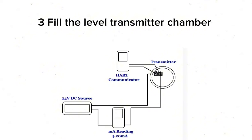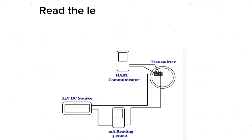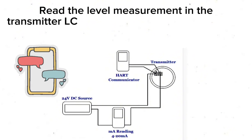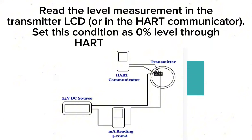Step 3: Fill the level transmitter chamber with water up to the 0% level. Read the level measurement in the transmitter LCD or in the HART Communicator. Set this condition as 0% level through HART Communicator.